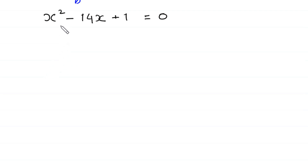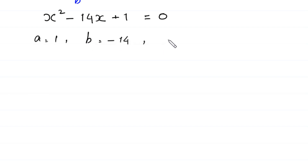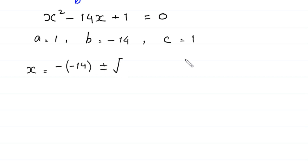This is a quadratic equation and is not factorable, so we solve it using the quadratic formula. In this equation a equals 1, b equals negative 14, and c equals 1. According to the quadratic formula, x equals minus b (which is negative 14) plus or minus the square root of b squared (negative 14 squared) minus 4 times a times c.